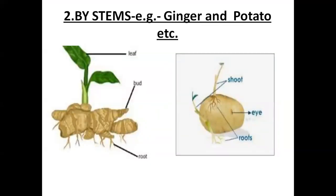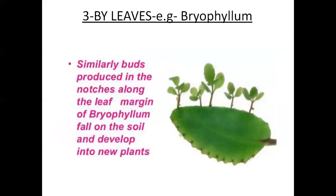The next one is reproduction by stem. Have you observed a potato or ginger carefully? It has small black dots known as buds or eyes. When an eye or bud is planted into soil, it grows into a new plant. They are actually underground stems that store food and grow into a new plant through their buds.